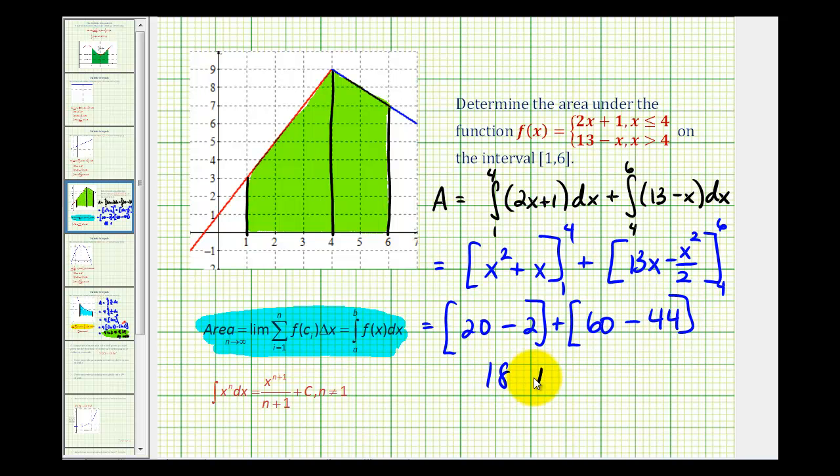So we'll have 18 plus 16, which will give us 34 square units for the area of this green shaded region. And notice the region on the left and the right are trapezoids, so we could have used the area formula for a trapezoid, but we wanted to use calculus techniques to determine this area. I hope you found this helpful.